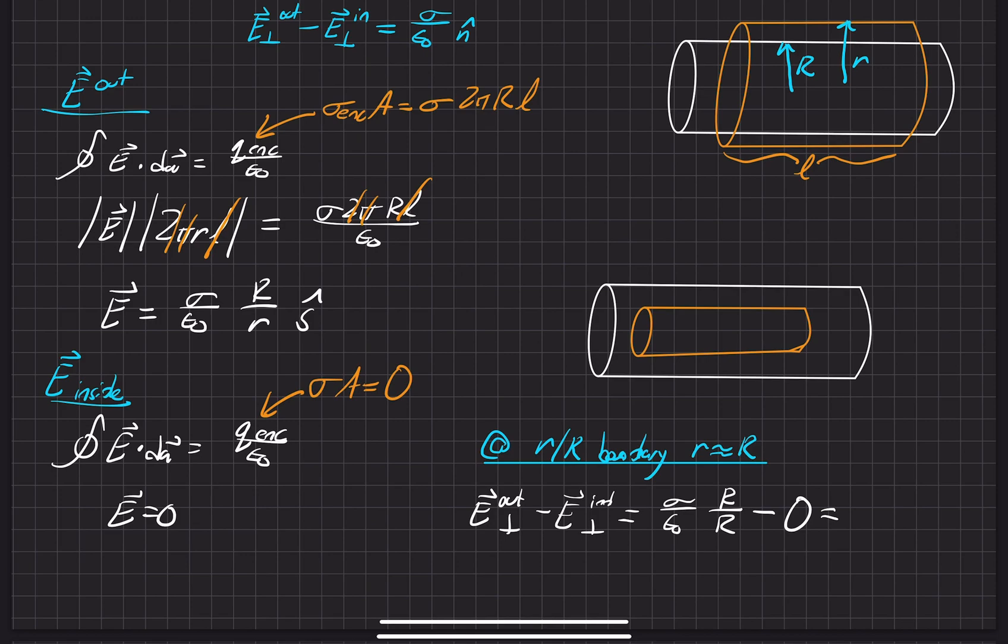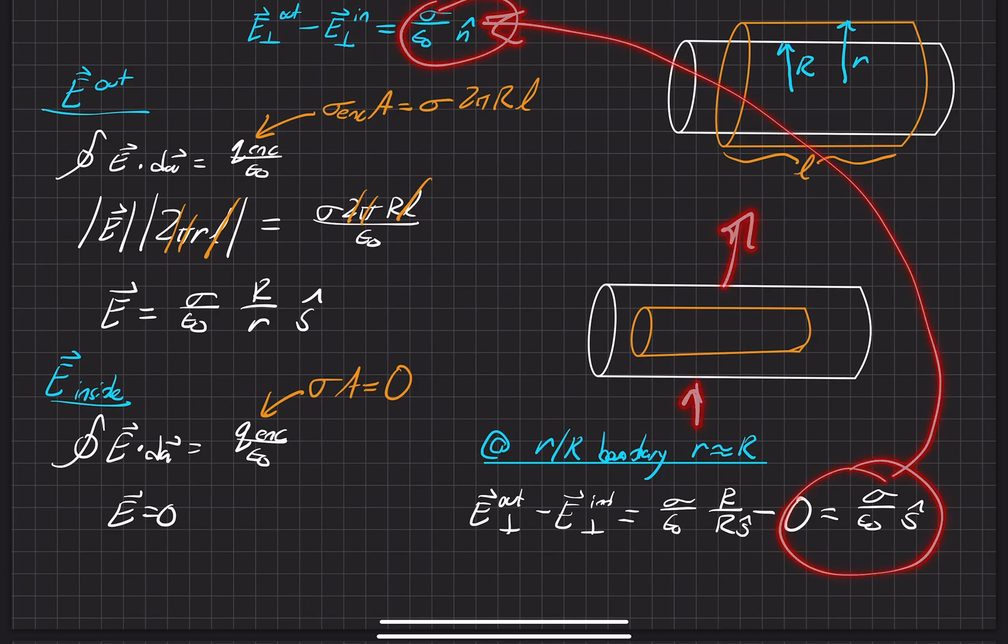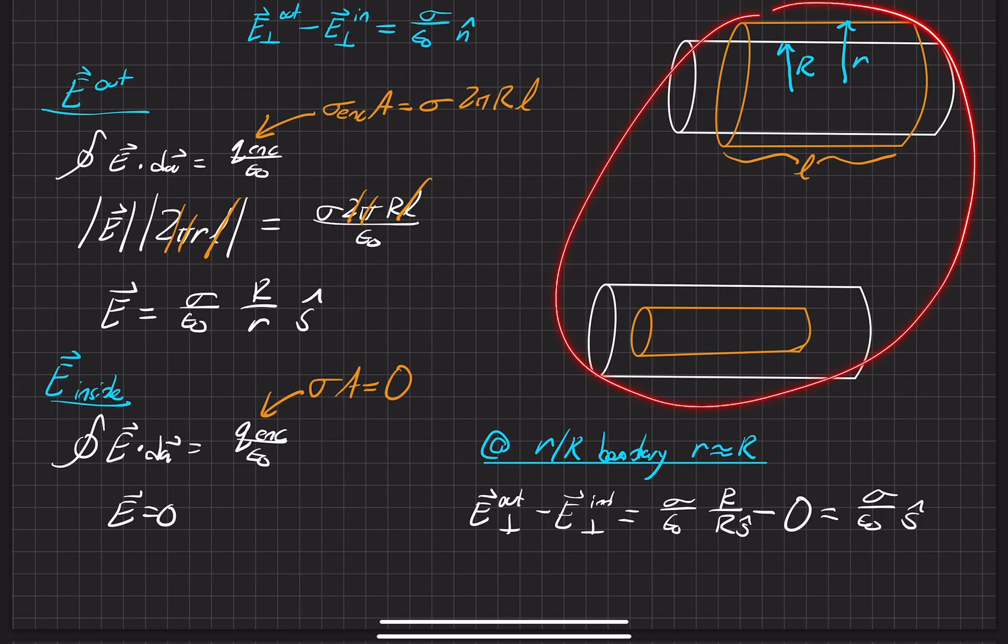of course, what do we get? And there's an S hat right here. It's equal to sigma over epsilon naught pointing in the radially outward direction, which is exactly equal to what we were trying to show in the first place here. So it does check using Gauss's law for this charge configuration here.